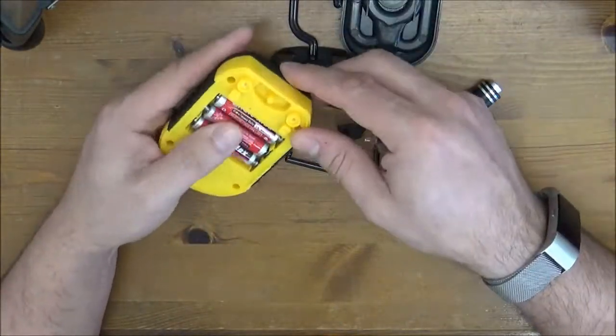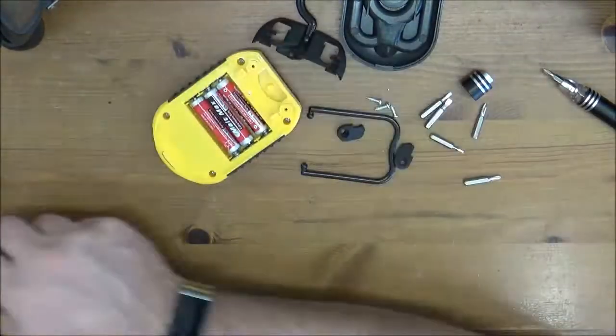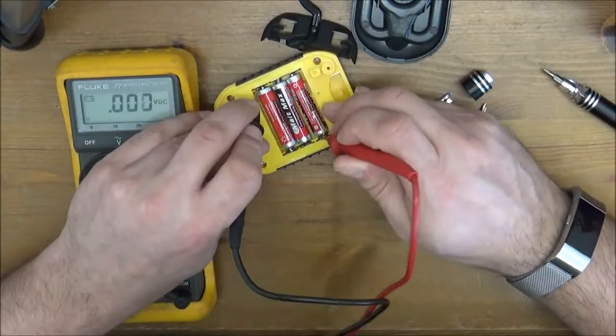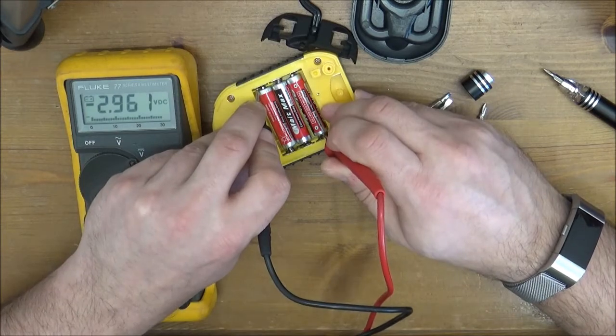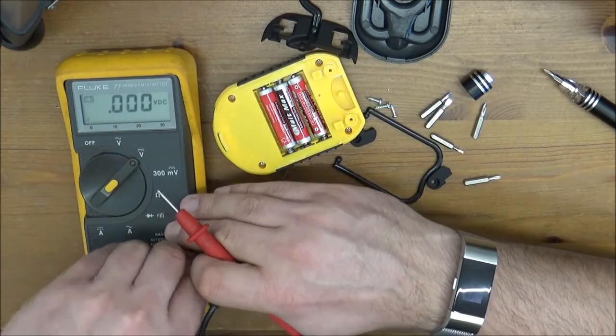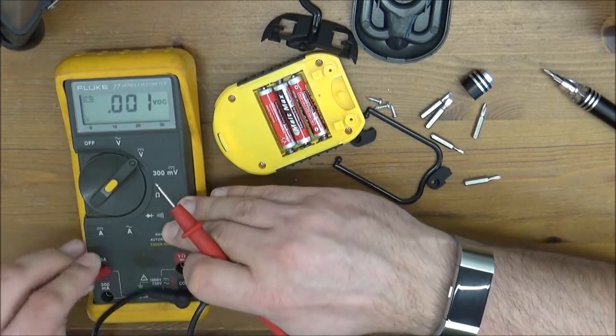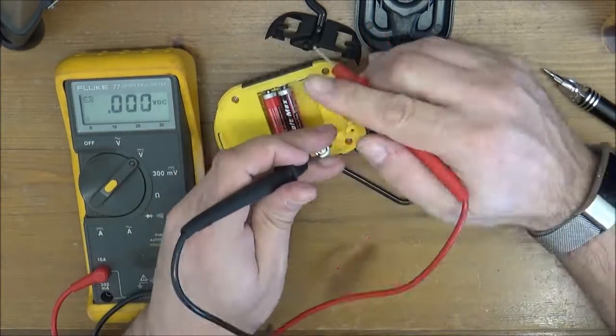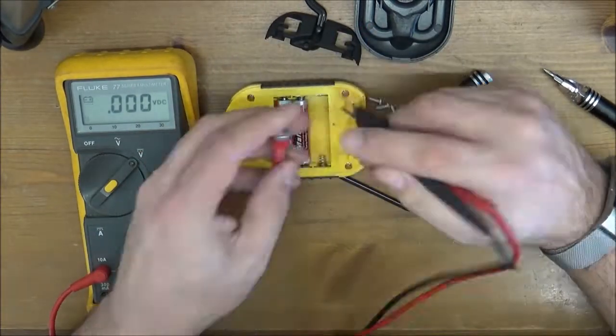I made a bit of a stupid mistake here. I didn't go across all three batteries - that was the voltage it shows, three volts, actually it should have been four and a half volts. There's three of those cells in there.